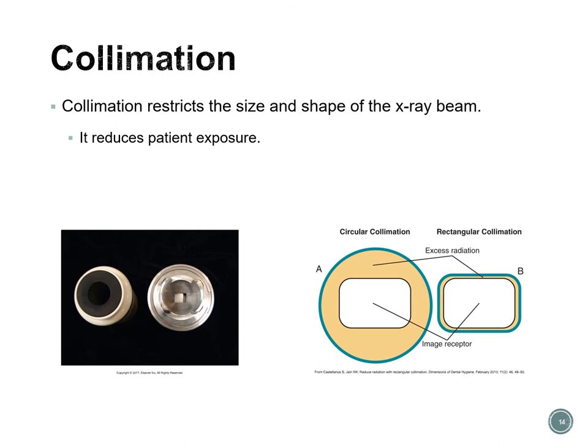Next we have collimation, done with a lead collimator. Collimation restricts the size and shape of the x-ray beam and reduces patient exposure. You can have either circular or rectangular collimation. The rectangular beam is approximately the size of a number 2 image receptor—either a digital sensor or a size 2 film. All the extra area beyond the rectangle represents excess radiation we don't need to send toward our patients, so rectangular collimation results in less radiation than circular.